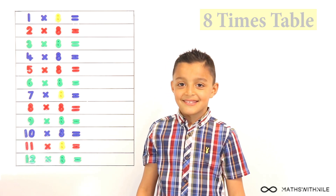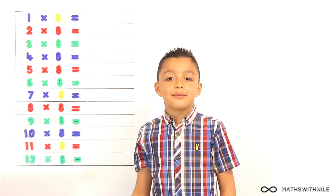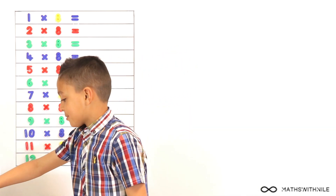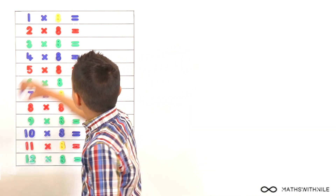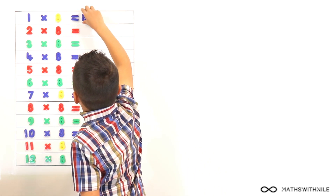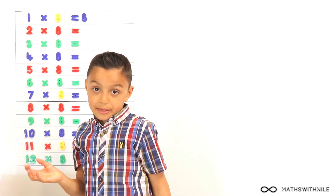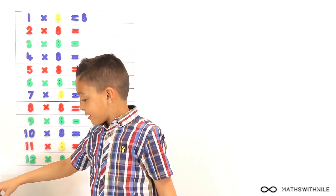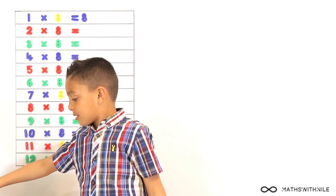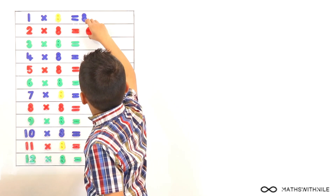So you want to start? 1 times 8. That's easy, it equals 8. Okay, 1 lot of 8 equals 8. 2 lots of 8 equals 16. So you already know that double 8 equals 16. Yeah, equals 16.